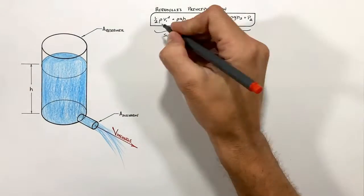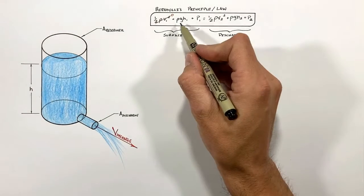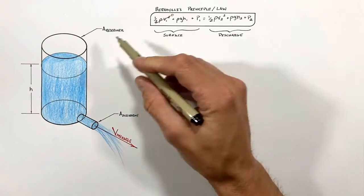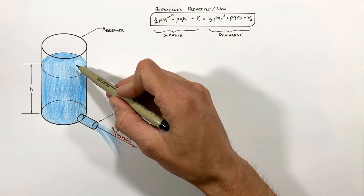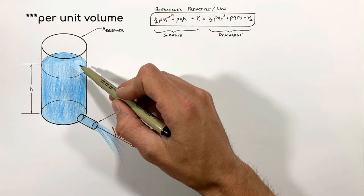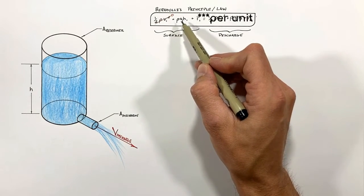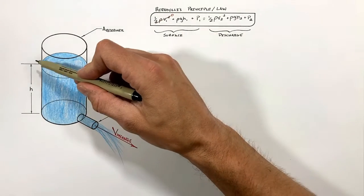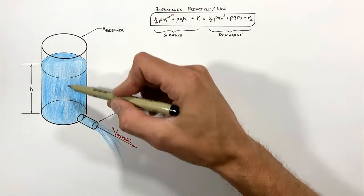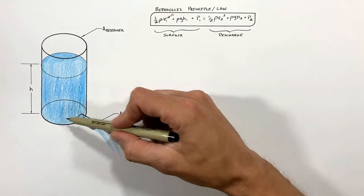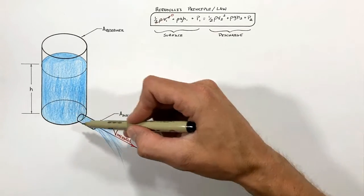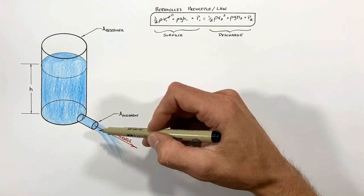So moving on through Bernoulli's, fluid at the surface has some gravitational potential and that's going to be given by this term rho g h, where h is the height of the fluid above some reference height which we're going to say is down here at the same height as the discharge hole.